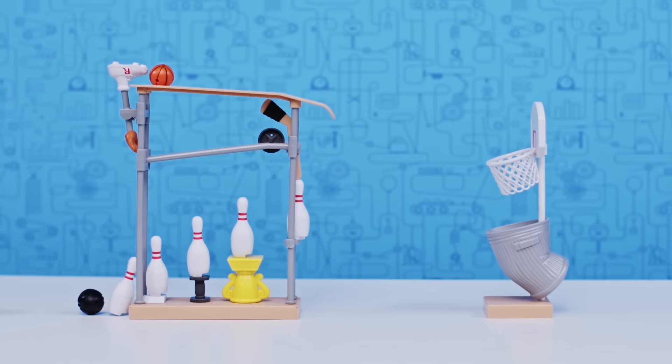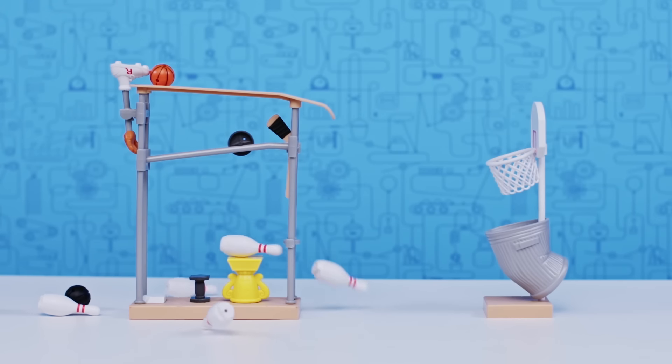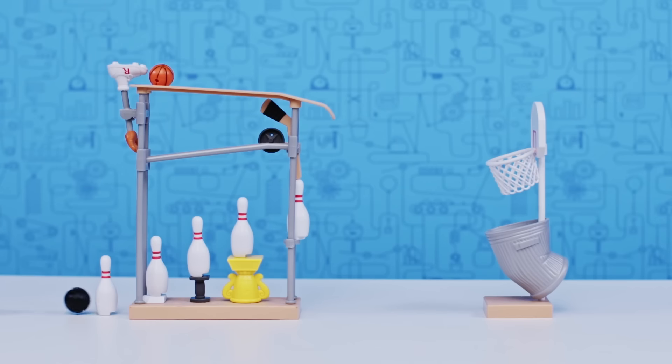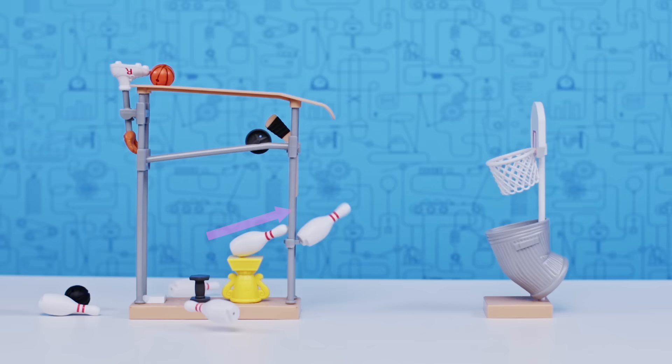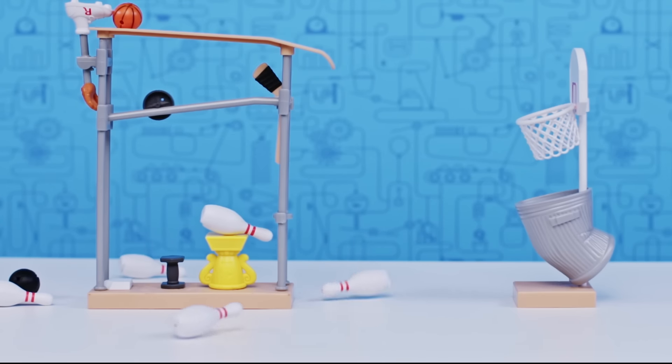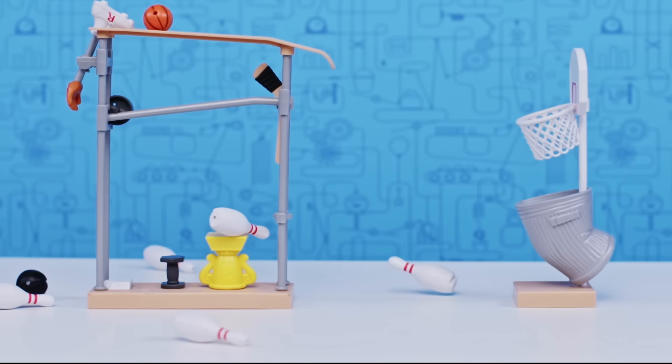So how does it work? Gravity and energy transfer work to complete the chain reaction. Gravity is the invisible force that pulls everything down to Earth. See how everything moves in the same downward direction? Energy transfer is happening all along the way. The rolling ball with kinetic energy knocks over the first pin, which falls due to gravity, and pushes on the next pin, which pushes onto the next. The energy in the ball was transferred from one pin to another, allowing the chain reaction to continue.